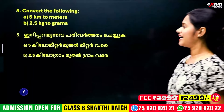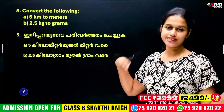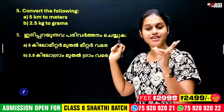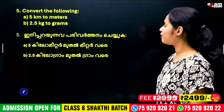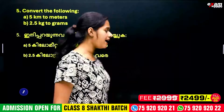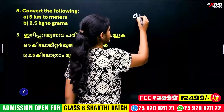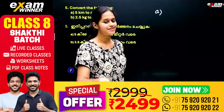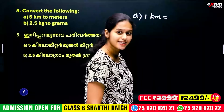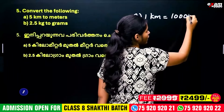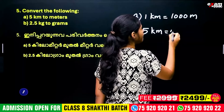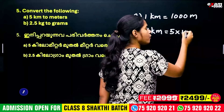Convert the following. 5 km to meters — how many meters is 5 kilometers? We know that 1 kilometer equals 1000 meters, so if we say 5 kilometers to meters, we multiply by 1000.